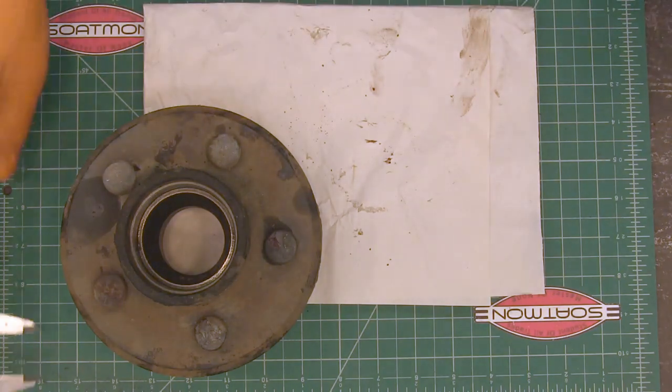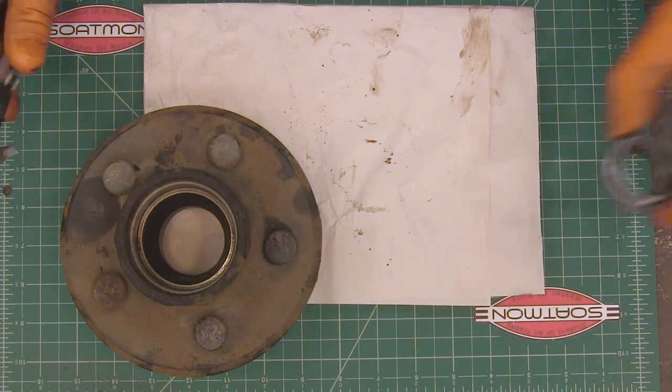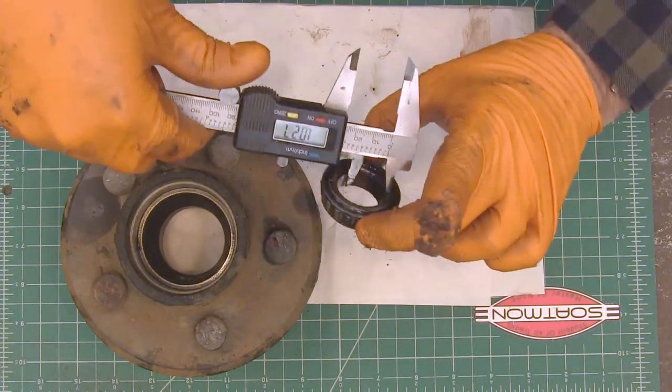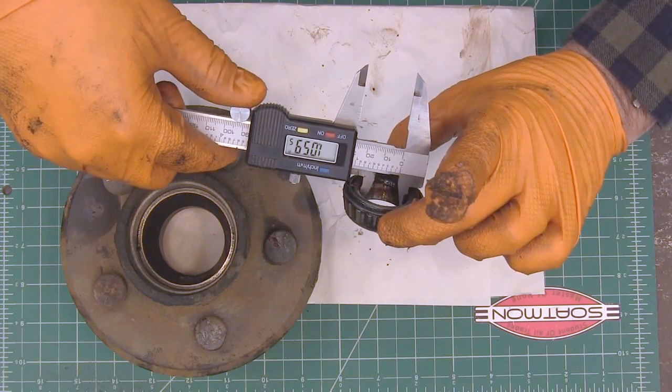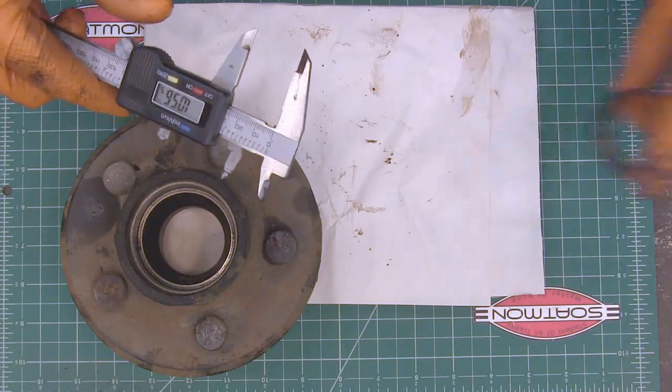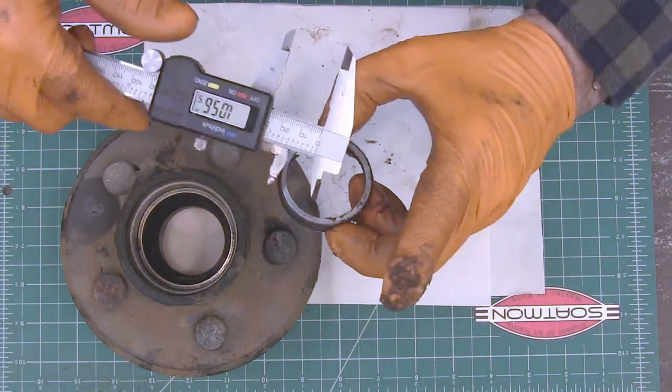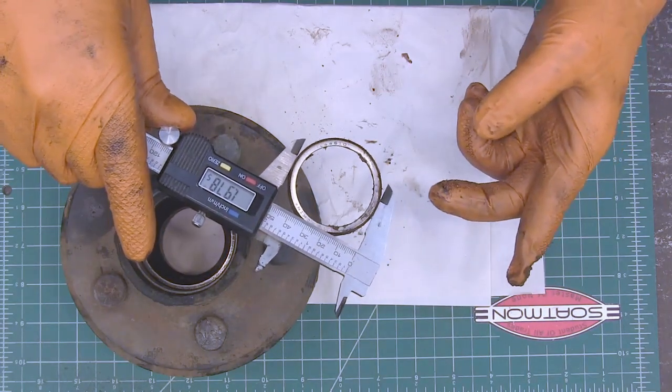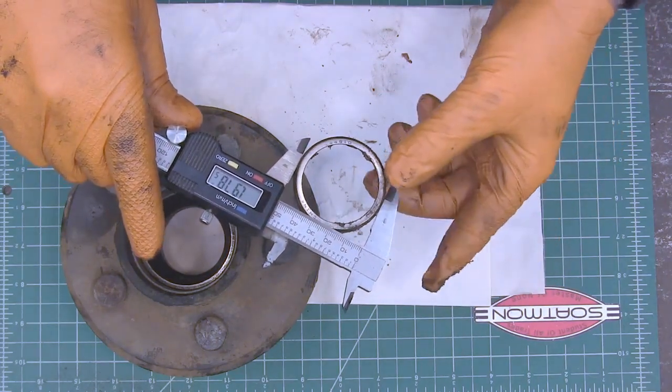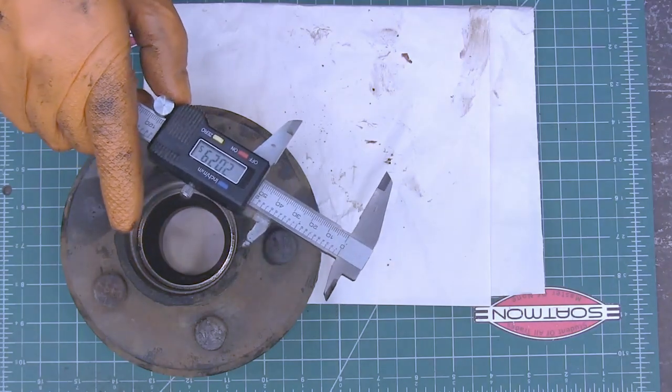Okay so you check that and then check your inner bearing the same way. It'll give you an ID inside diameter and you just make sure that those match up. And then your outer race you're gonna measure the outside diameter like that. Okay and if all of those match up.